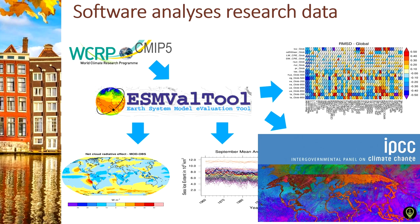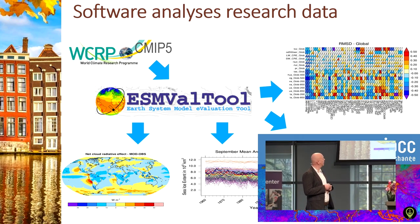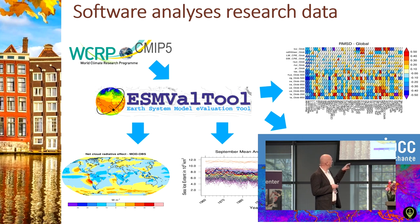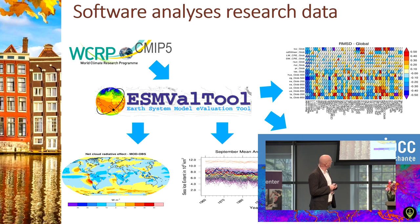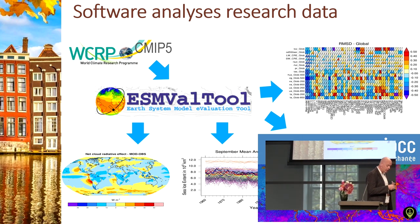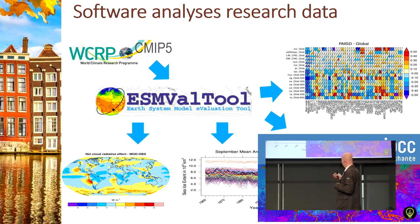Another reason to use research software is to analyze research data — and it can be data from those models, from those instruments, from a survey. It can be really broad; it depends on your discipline. A nice example is the ESM Vault Tool, where ESM means Earth System Model. This is a tool that we worked on with many international partners, that basically takes data from a climate model and makes very nice graphs, plots, and pictures out of those climate data — which are then used to share ideas and insights with other researchers.